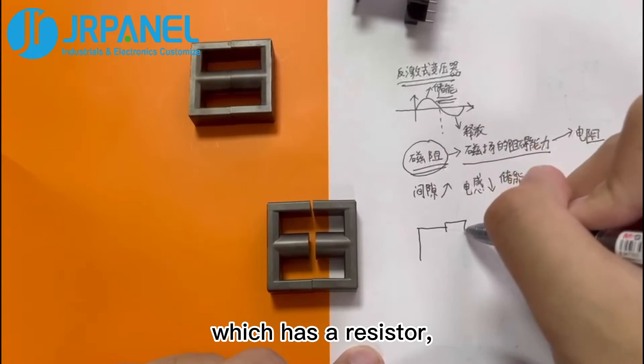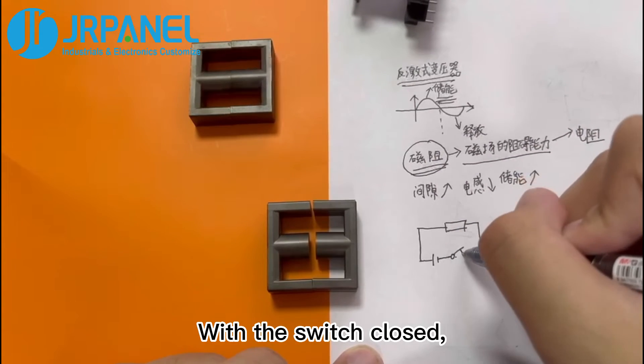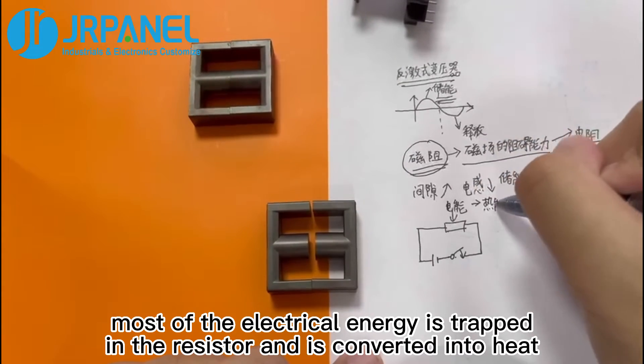Look, this is a circuit which has a resistor and a power supply as well as a switch. With the switch closed, most of the electrical energy is trapped in the resistor and is converted into heat.